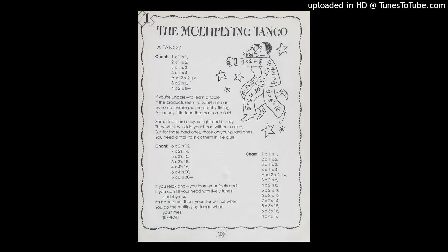6 times 2 is 12, 7 times 2 is 14, 5 times 3 is 15, 6 times 3 is 18, 4 times 4 is 16, 5 times 4 is 20, 5 times 6 is 30.